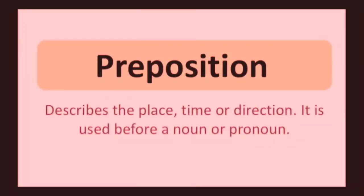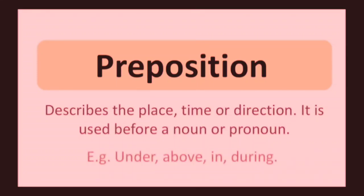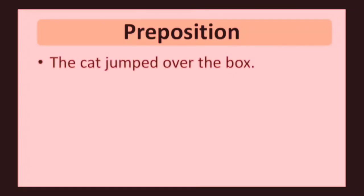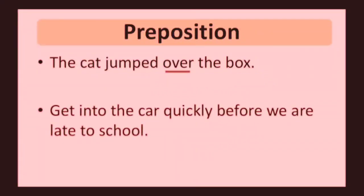Preposition. Preposition describes the place, time, or direction. It is used before a noun or pronoun. Examples: under, above, in, during. The cat jumped over the box. The preposition in this sentence is over. Get into the car quickly before we are late to school. The preposition in this sentence is into.